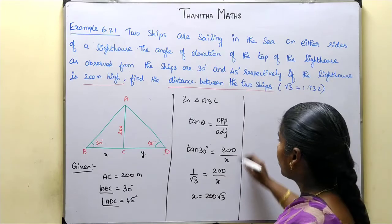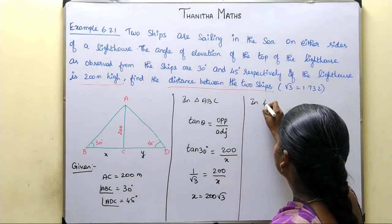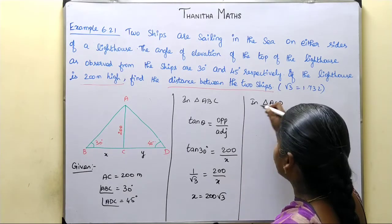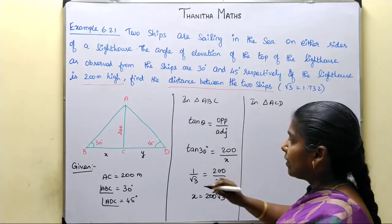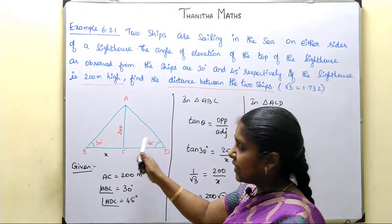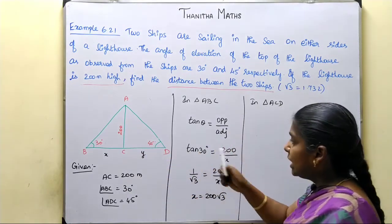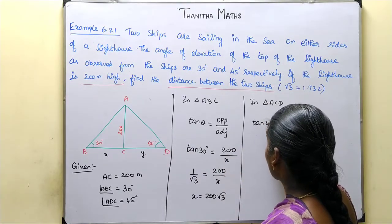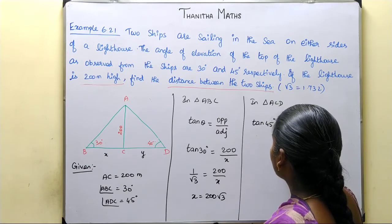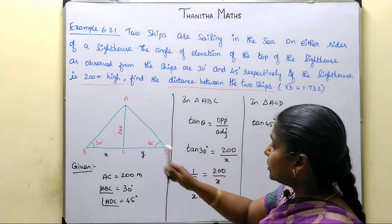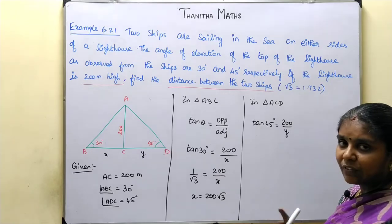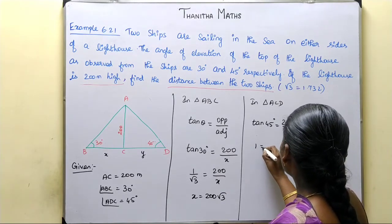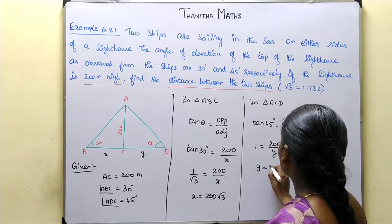Now we will take the right triangle — triangle ACD. Tan 45 degrees equals the opposite side 200 over the adjacent side y. What is tan 45? Tan 45 value is 1. So 1 equals 200 over y, therefore y equals 200.